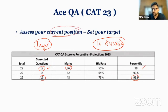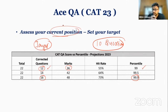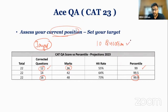Take any CAT previous year question paper, attempt it yourself, and see where your current position stands. Based on that current position, set your target. If you are already at 10 questions, then take the next higher target.